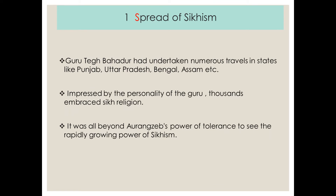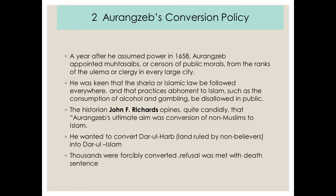Number one: the spread of Sikhism. We already talked about the travels Guru Tegh Bahadur Ji had undertaken in states like Punjab, Uttar Pradesh, Bengal and Assam. So by his travels, Sikhism had become a very popular religion. Impressed by the personality of Guru, thousands embraced the Sikh religion. Now for a fanatic like Aurangzeb, it was beyond his power of tolerance to see the rapidly growing power of Sikhism.